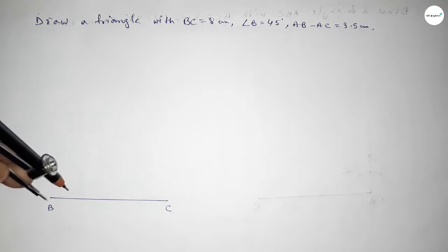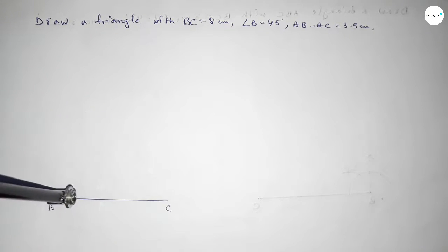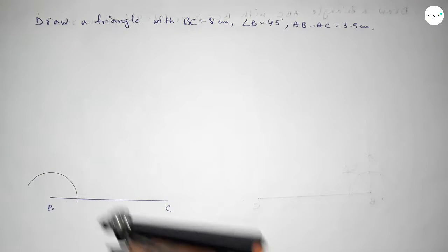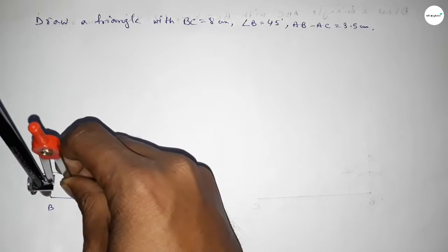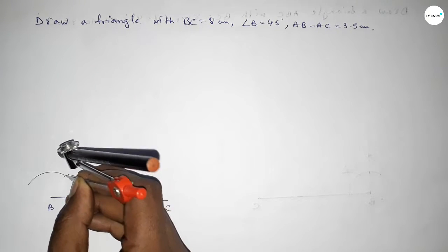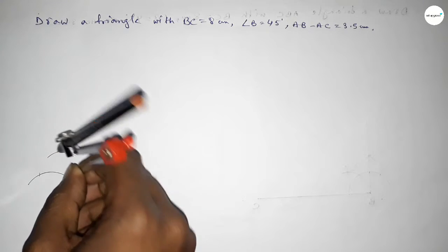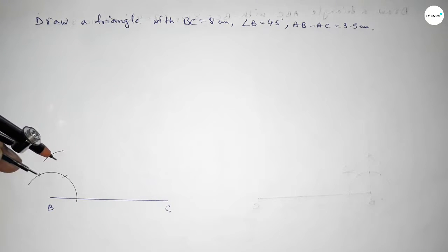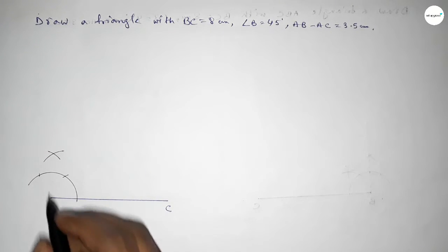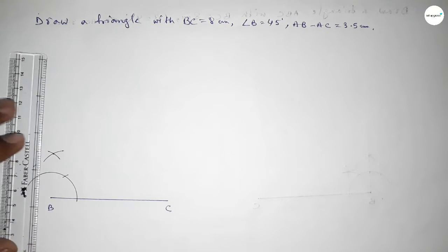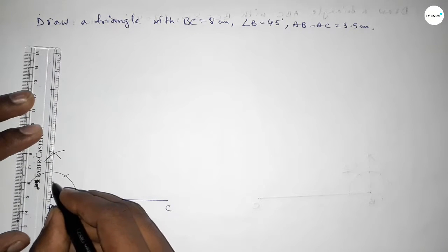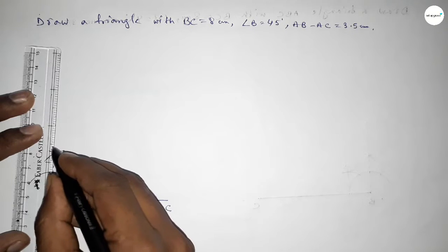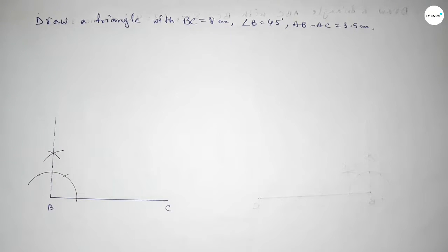Putting the compass on point B and taking any length, drawing an arc. With the same length, putting the compass here and cutting here, again putting the compass here and cutting here, and drawing an arc here with the same length. Both curves intersect at a point. Joining this to get a 90 degree angle — we got 90 degrees.